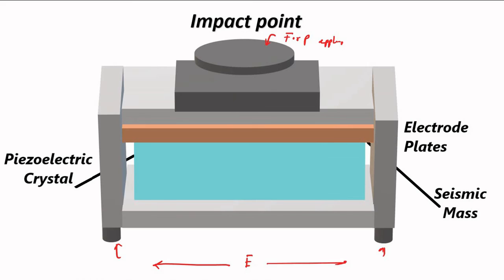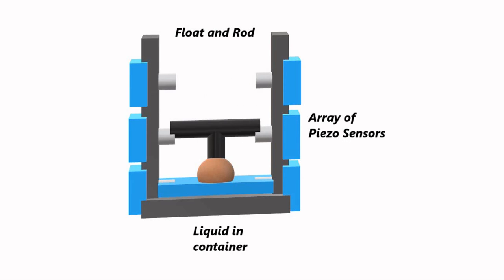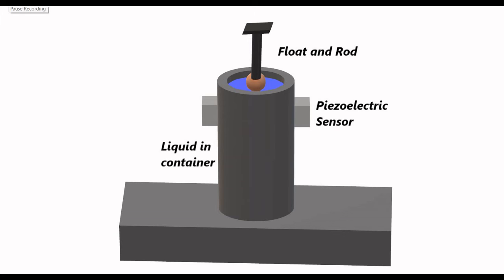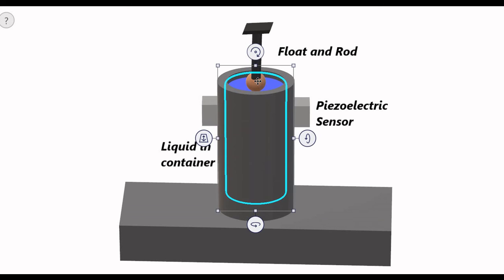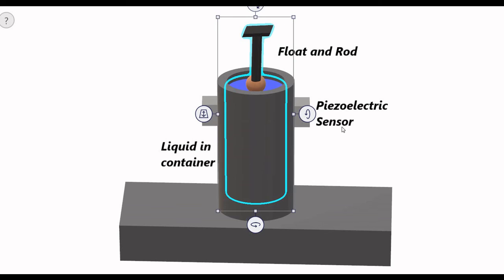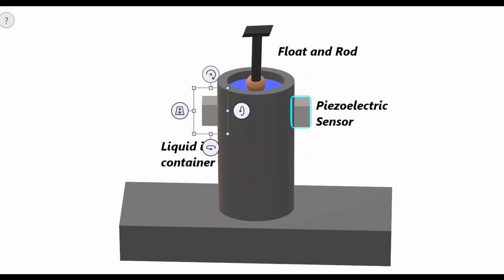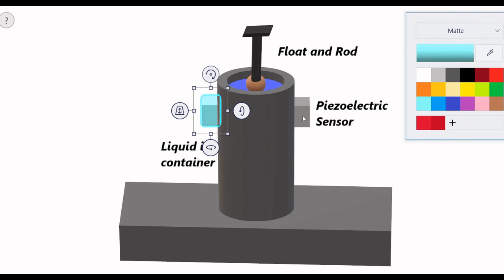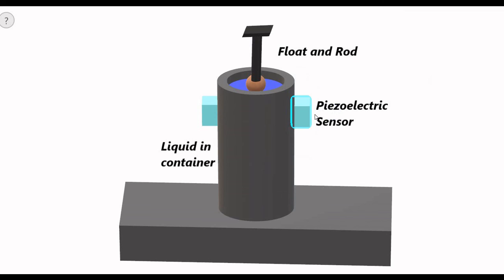Let us understand this from a three-dimensional perspective. We have liquid in the container with a float and rod arrangement. The float floats over the liquid surface, and as the liquid level changes, the float and rod move up and down. When the ends of the rod strike the piezoelectric sensor, it gets triggered and generates an electrical signal as per the piezoelectric effect. This is the single sensor arrangement — when the liquid goes above or below a certain limiting level, it creates an alert or alarm signal.